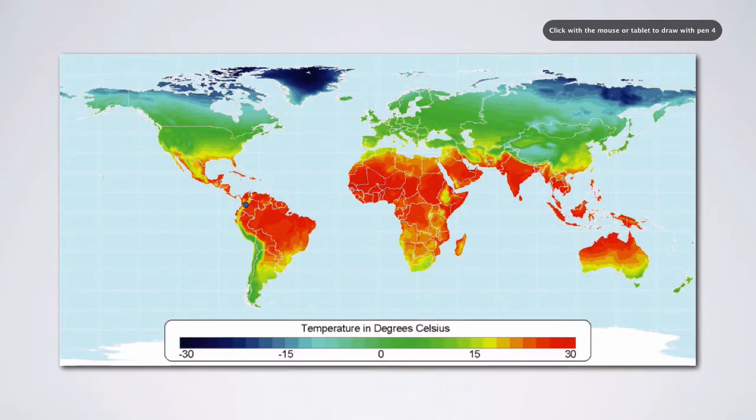So you see a latitudinal gradient in temperature, but there's other differences, too, that have to do with elevation, for example, where it's hotter in the lower areas and cooler in the higher areas.